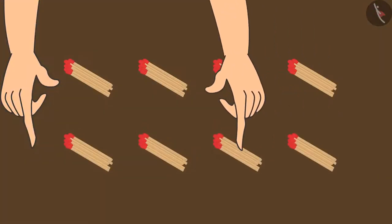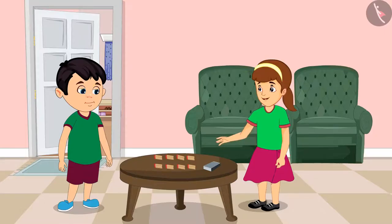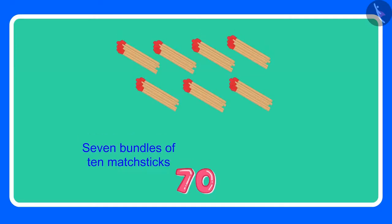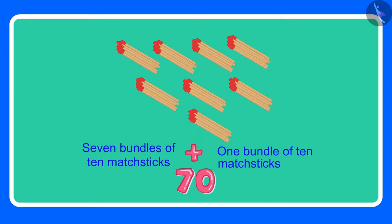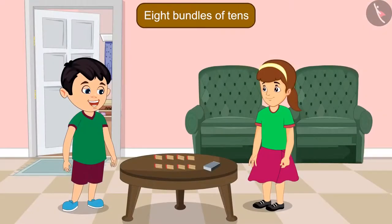Chonu starts counting and says: So these are now 70 matchsticks. Aarti asks: Chonu, how many bundles have you made? Chonu replies: Aarti, for 70 we needed 7 bundles, and 70 has a 0 also, which means 10 more matchsticks. Therefore, I have made 8 bundles of 10 matchsticks.